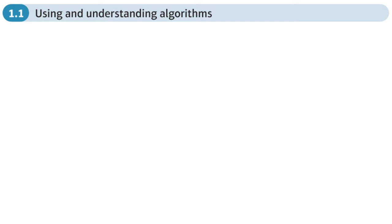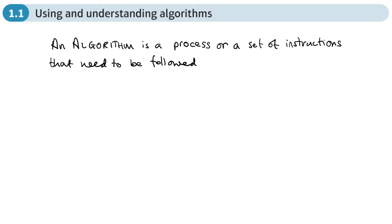This is the first section of chapter 1 on algorithms — using and understanding algorithms. An algorithm is a process or a set of instructions that need to be followed. In fact, lots of the D1 Decision 1 module is about algorithms: processes or sets of instructions that need to be followed exactly to the letter.